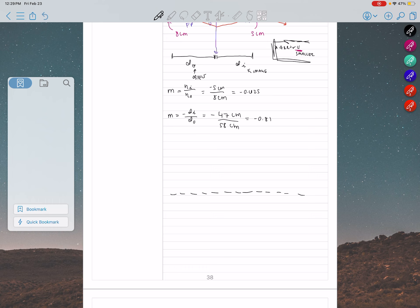Alright. So let's say I have 18, 20, and that. So I have my focal point, I have my second focal point, and over here I'm going to have my object.